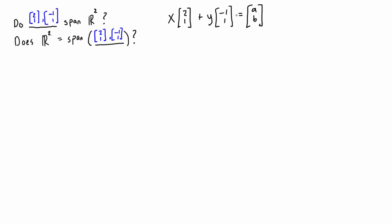Another way to write this is as a coefficient matrix with entries 2, 1, -1, 1, multiplied by the vector with components x and y, equaling (a, b). These two statements are essentially the same. The x and y values are the scalars we multiply to each of the given vectors when doing a linear combination to get the target vector.